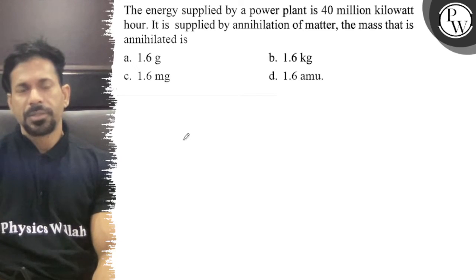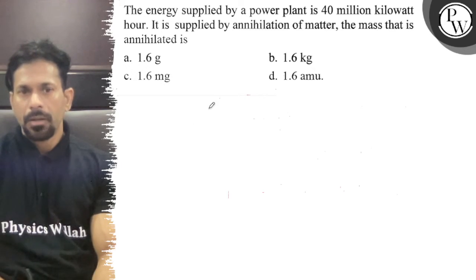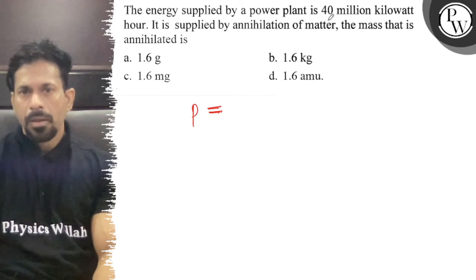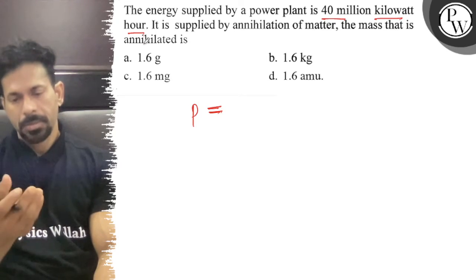Hello, let's see the question. The energy supplied by the power plant is 40 million kilowatts per hour. It is supplied by annihilation of matter. The mass that is annihilated is...